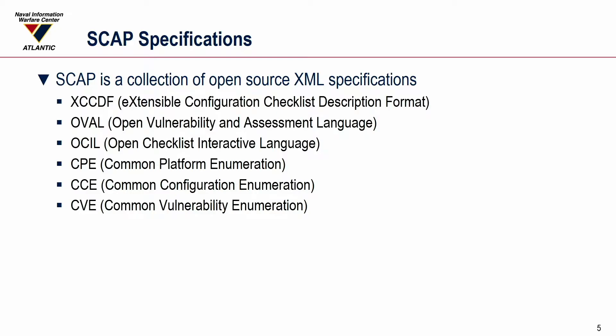OVAL is the Open Vulnerability and Assessment Language. It's the way to do automated checks against operating systems and applications — how you query the system to get to the state of the configuration. OCIL is the Open Checklist Interactive Language. It's not as commonly used right now, but it is used if you have a policy requirement that cannot be programmatically performed — if you need to interview somebody and ask an actual question. The Common Platform Enumeration, Common Configuration Enumeration, and Common Vulnerability Enumeration are just common ways of identifying things so that all applications sharing the data know what they're talking about — a certain way to indicate Windows 10, password length in CCE, or a buffer overflow in a CVE reference.